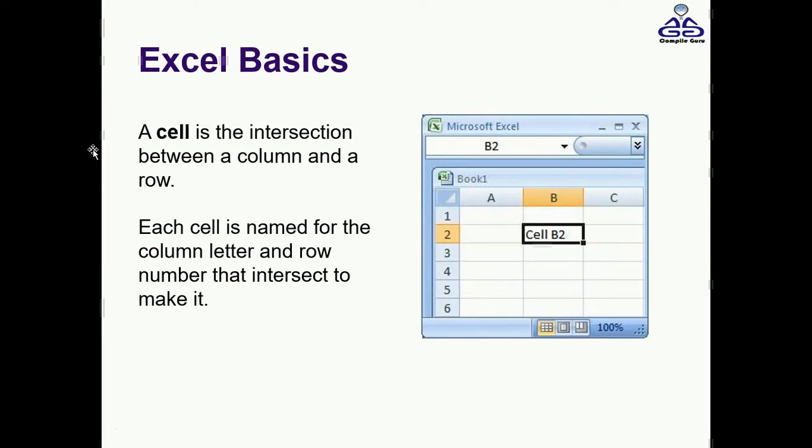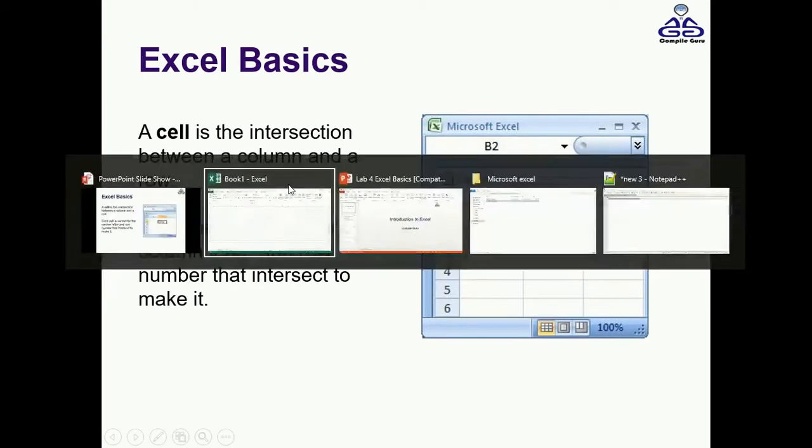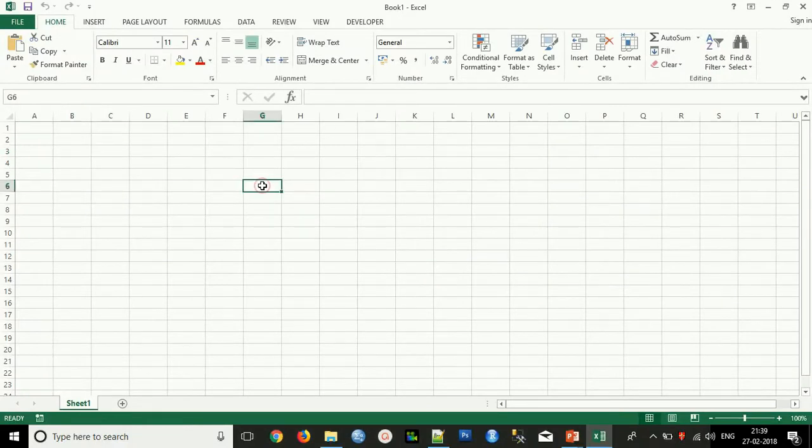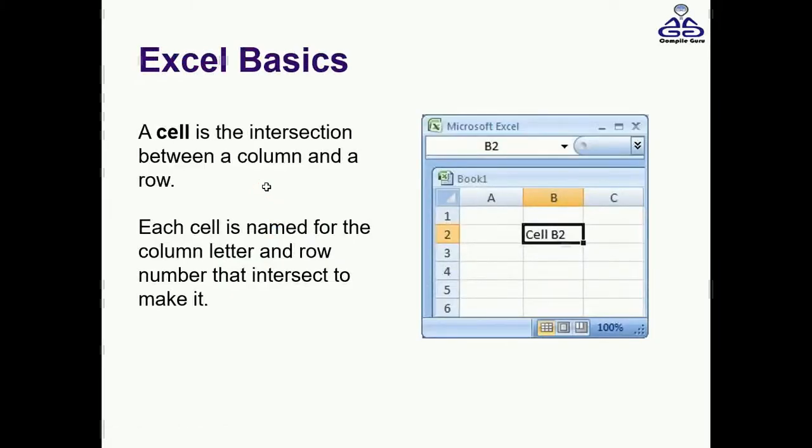Each cell has its address. For example, this cell has an address of G6. In Excel, every cell is allocated an address in order to perform operations. Data entry can be achieved in two ways. First, you type directly